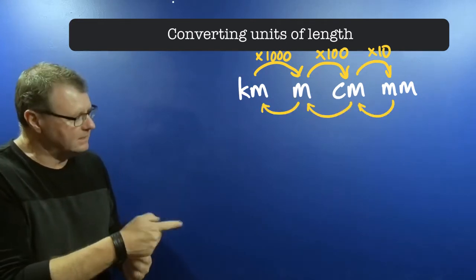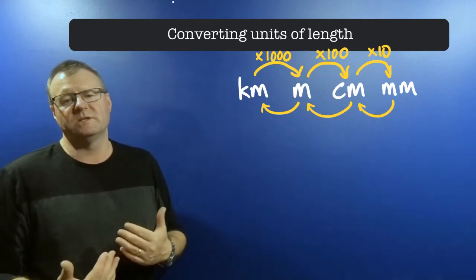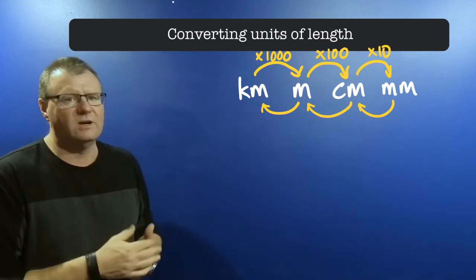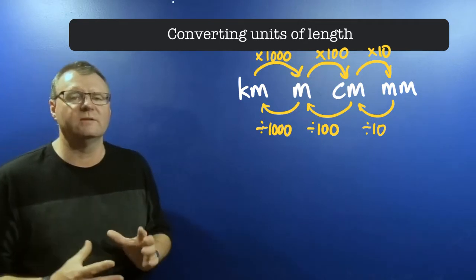Coming across the bottom, I put my arrows back in the other direction. If I'm moving from millimeters to centimeters, I'm going to do the opposite of multiplying—I'm going to divide, but the numbers stay the same. So I get divided by 10, divided by 100, and divided by 1,000. I can use this chart now to do conversions really easy.